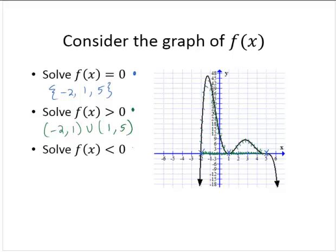Finally, let's solve f of x is less than zero. The parts of the curve that are below the x-axis I'm marking in red. The x values associated with those points I'm now marking on the axis. Writing those as intervals: from negative infinity to negative two, union five to infinity.